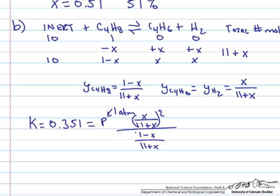And if we just simplify this, then we end up with something very similar to what we had before. And that's just that it's equal to P times X squared over 1 minus X times 11 plus X. And if we go through and solve this equation for X, X is equal to 0.83. So a conversion for this case is equal to 83%.